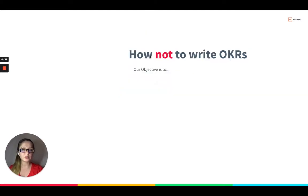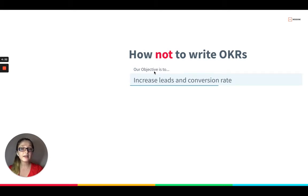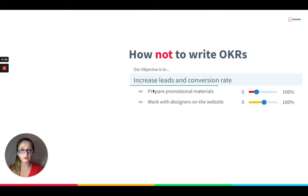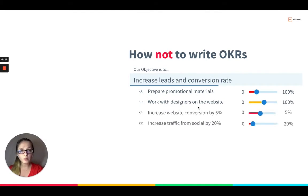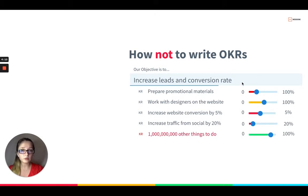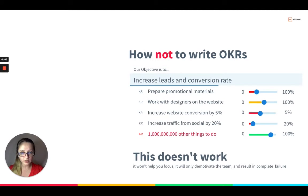Usually a marketing team would say something like 'our objective is to increase leads and conversion rate,' and then start listing different projects as key results, like preparing promotional materials or working with designers on the website. They might also throw in performance targets like increased website conversion or traffic from social — a billion other things they want to do this quarter. The problem with this approach is initiatives overload: it won't help you focus and it leads to a very demotivated team.